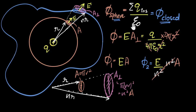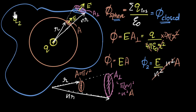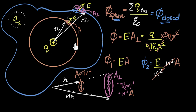But wait — Gauss's Law works for multiple charges. If there's another charge Q2 inside, we can draw another tiny sphere around Q2 and prove, the same way, that the flux through the surface due to Q2 is Q2 by epsilon naught. Then, using the superposition principle, the total flux due to both charges is Q1 by epsilon naught plus Q2 by epsilon naught, or Q1 plus Q2 divided by epsilon naught. We can do the same for all charges, regardless of where they are inside.